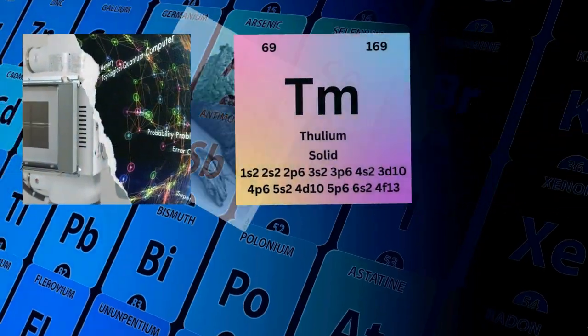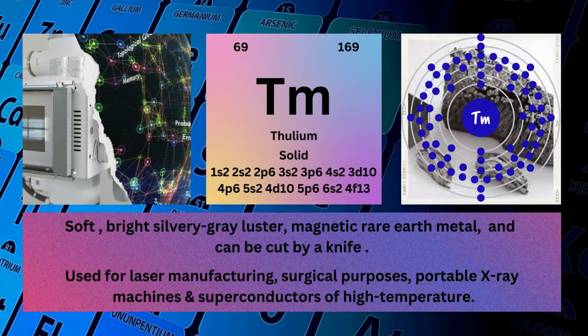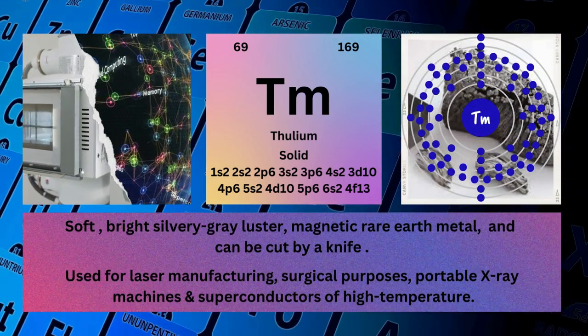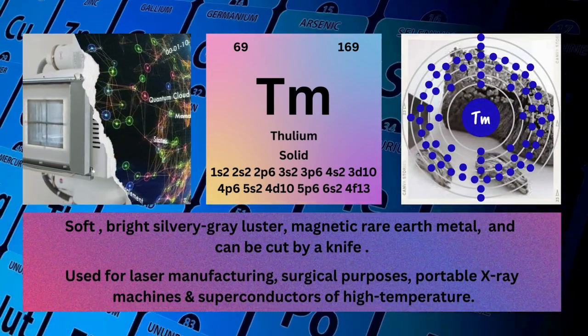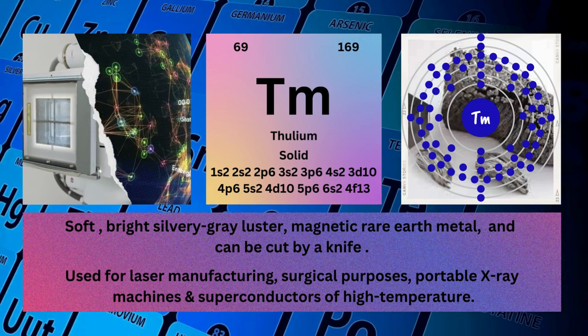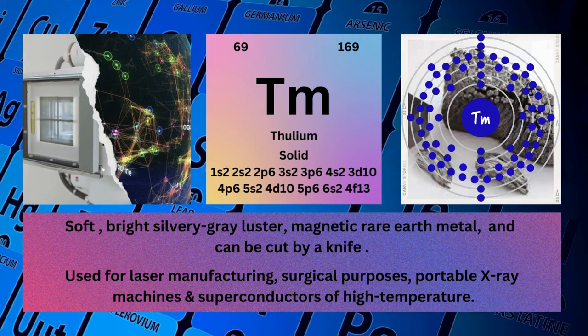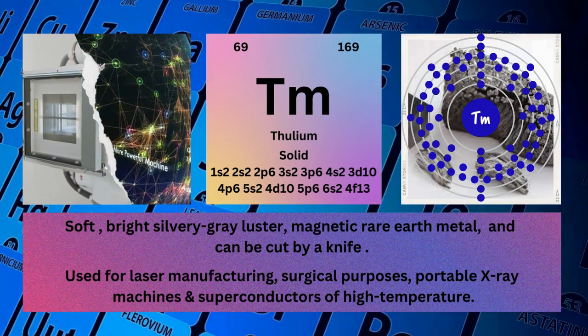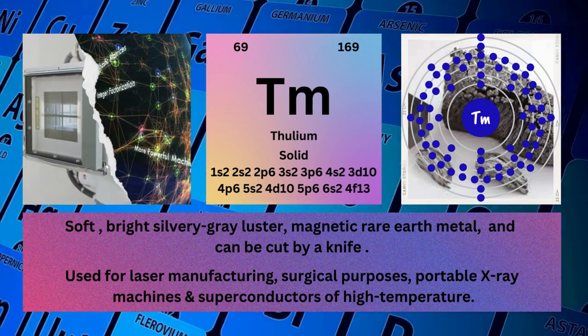Thulium. Atomic number: 69. Mass number: 169. Symbol: Tm.